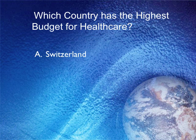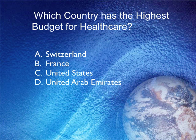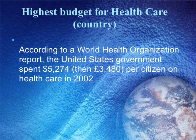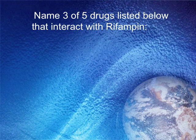Which country has the highest budget for health care? Switzerland, France, United States, or United Arab Emirates? The correct answer is the United States. According to the World Health Organization, the U.S. government spent $5,200 per citizen on health care in 2002 — more than anyone else. Yet we are not the top-ranked health care system — in fact, far from it. Hence the debate over our health care dollar.